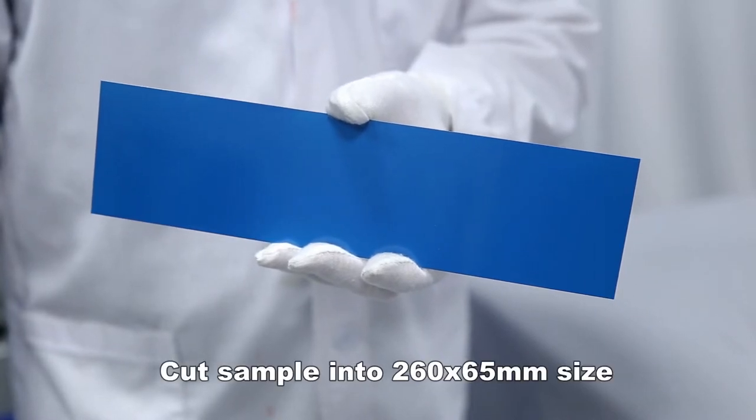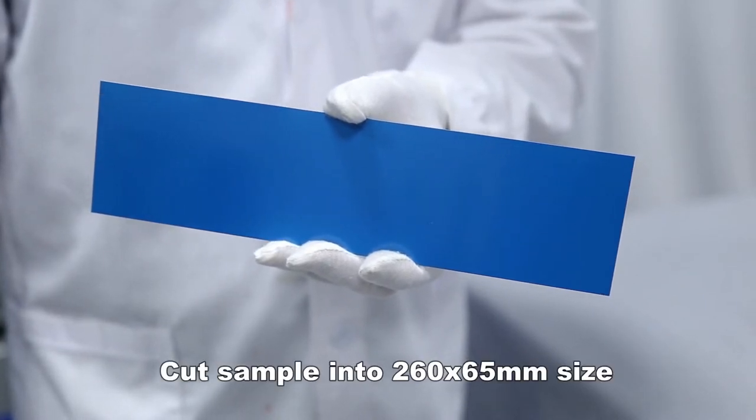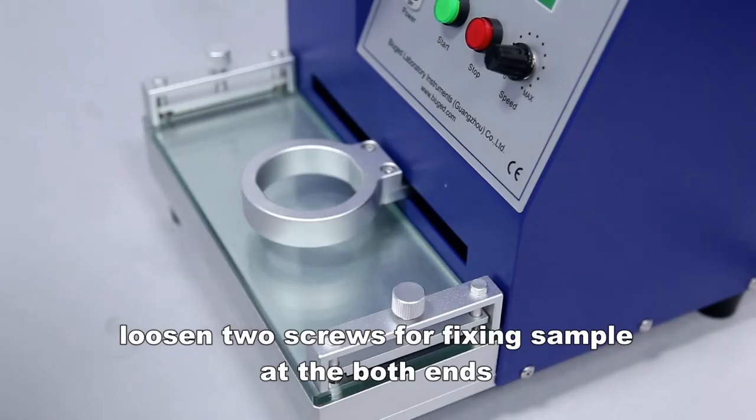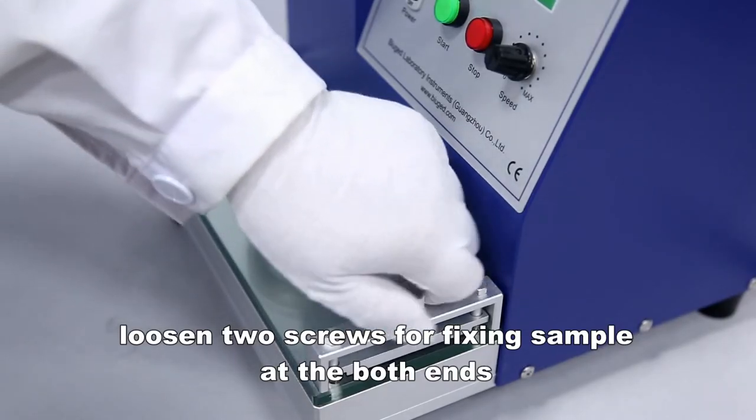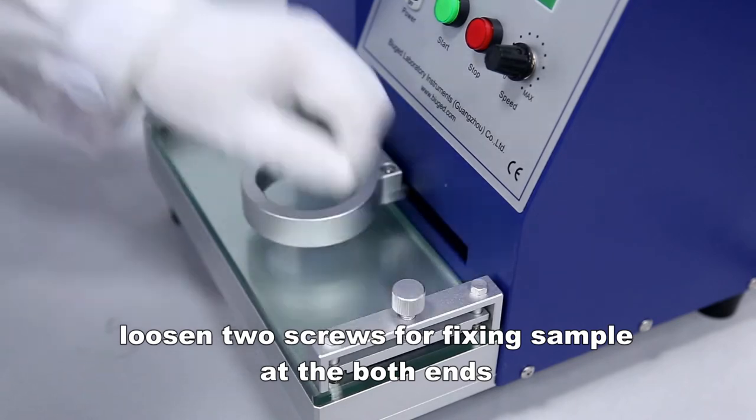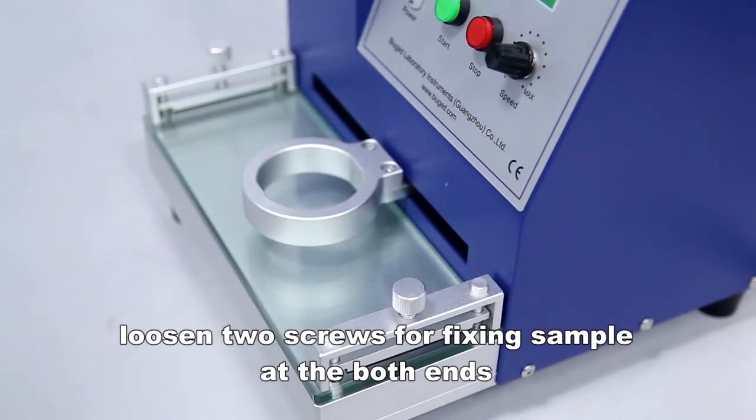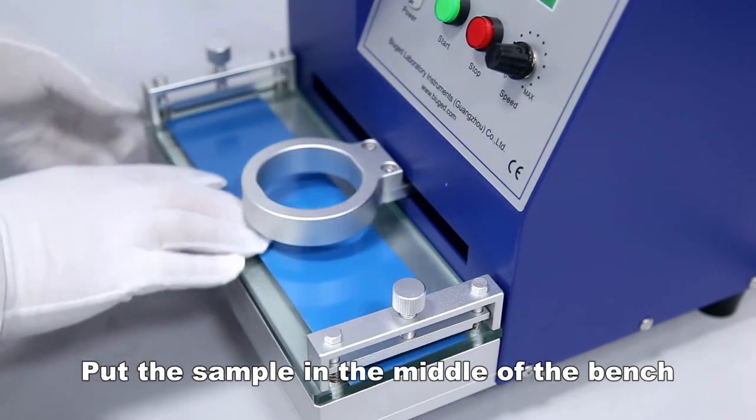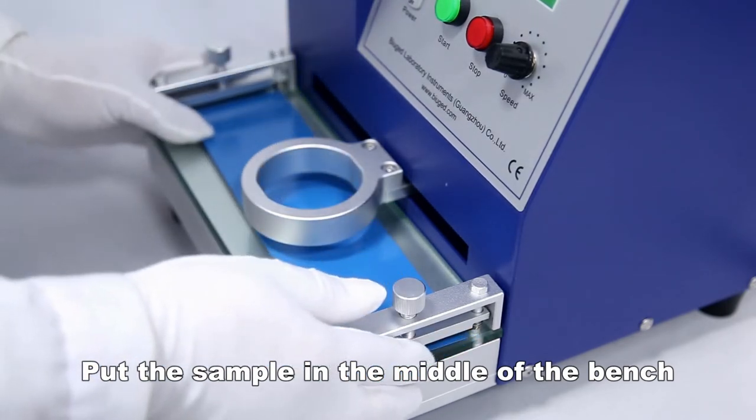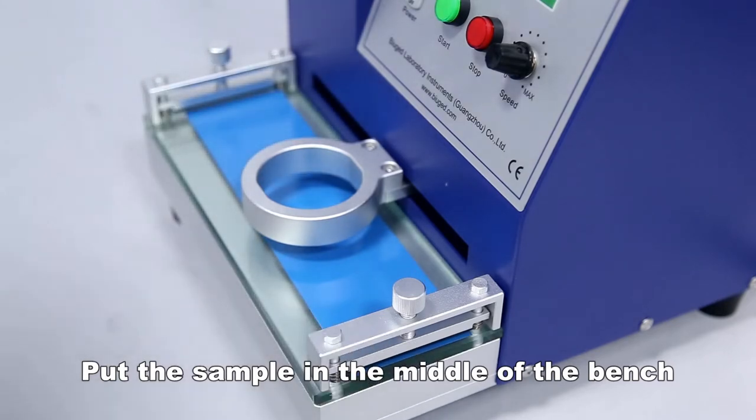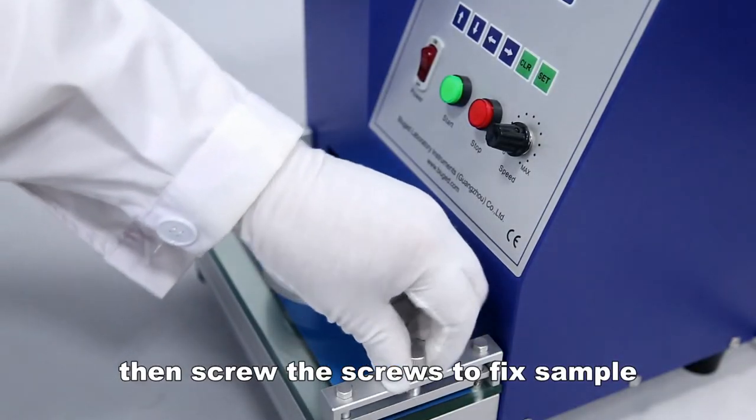Cut sample into 260 asterisk 65 millimeters size. Loosen two screws for fixing sample at both ends. Put the sample in the middle of the bench, then screw the screws to fix the sample.